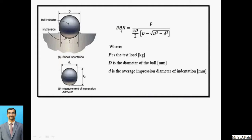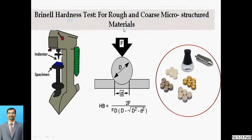BHN stands for Brinell Hardness Number — B for Brinell, H for Hardness, N for Number. In the formula, the term (πD/2) appears in the denominator. This is a schematic sketch showing the specimen and indentation: capital D is the diameter of the ball and P is the material being tested. Materials such as bronze, aluminium, cast iron, and steel are those on which we conduct the test by applying the indenter, and we obtain the hardness number of that particular material.